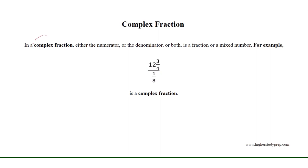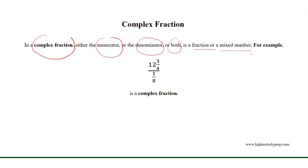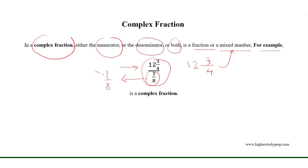In a complex fraction, either the numerator or the denominator or both is a fraction or a mixed number. For example, this is a complex fraction where the numerator 12 and 3 over 4 is a mixed number, and the denominator 1 over 8 is a fraction where the numerator is 1 and the denominator is 8.